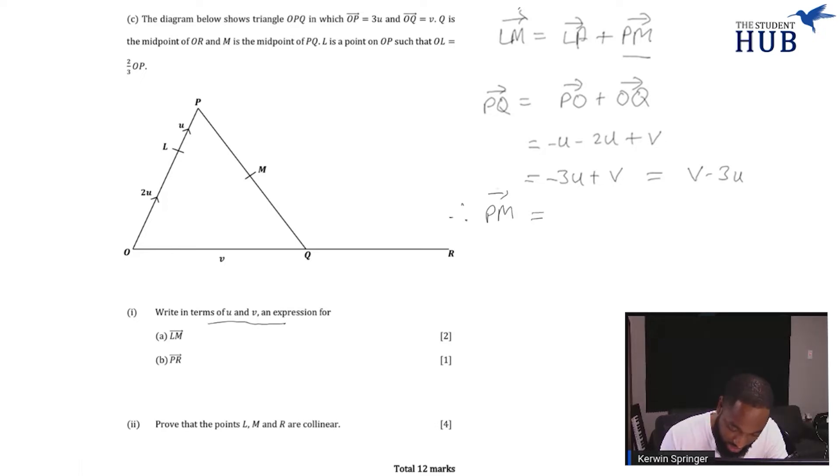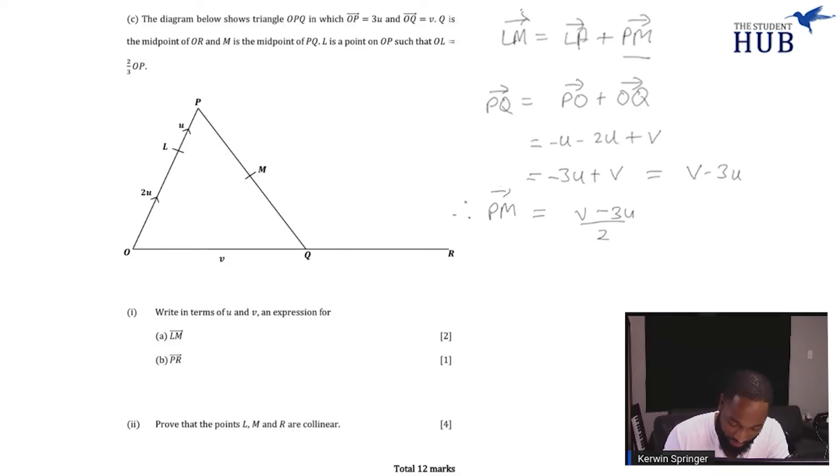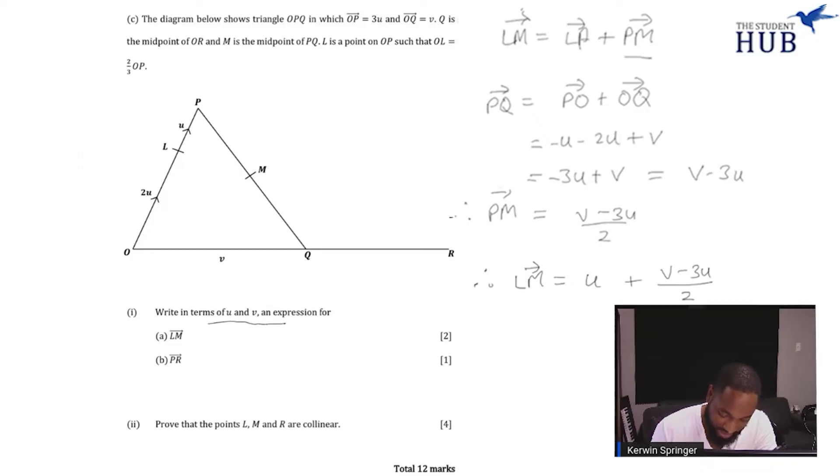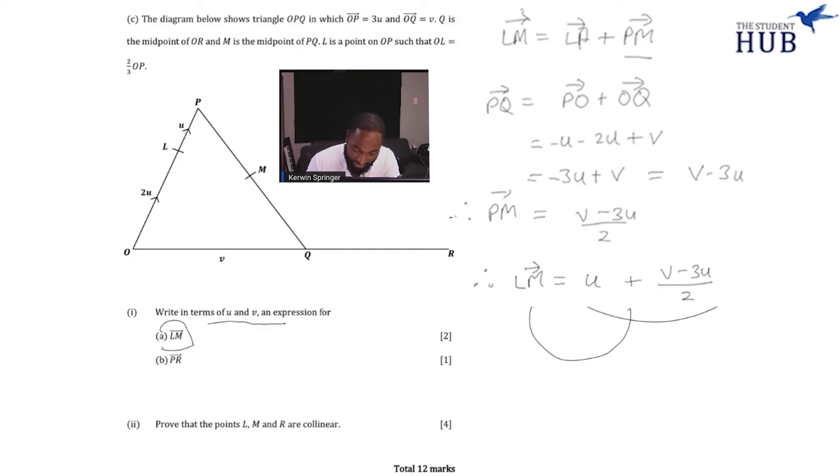Therefore PM which is half of PQ is equal to (v minus 3u)/2. I did this question recently on YouTube. Therefore LM is equal to LP, LP is u, and PM we just wrote that, so v minus 3u over 2. Write in terms of u and v an expression for LM. This is in terms of u and v and it is an expression for LM.